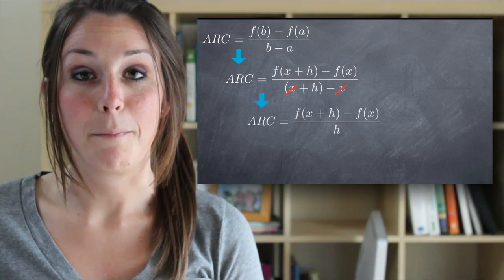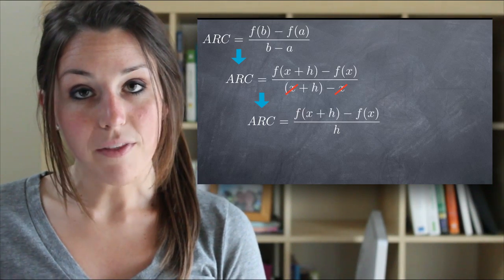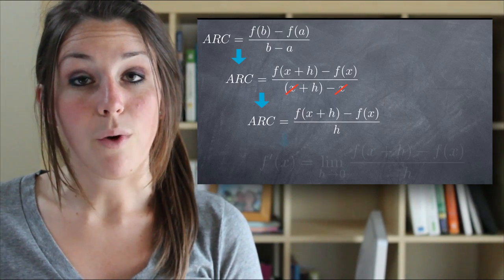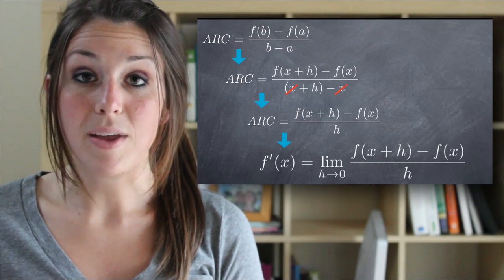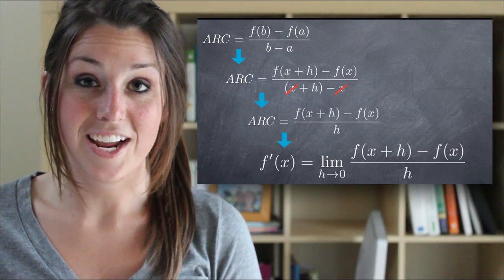Now we can simplify the function by canceling x's in the denominator. Then, thinking about the tangent line, and borrowing what we learned last time about limits, we can take the limit as h goes to 0, and this gives us the slope of the tangent line.